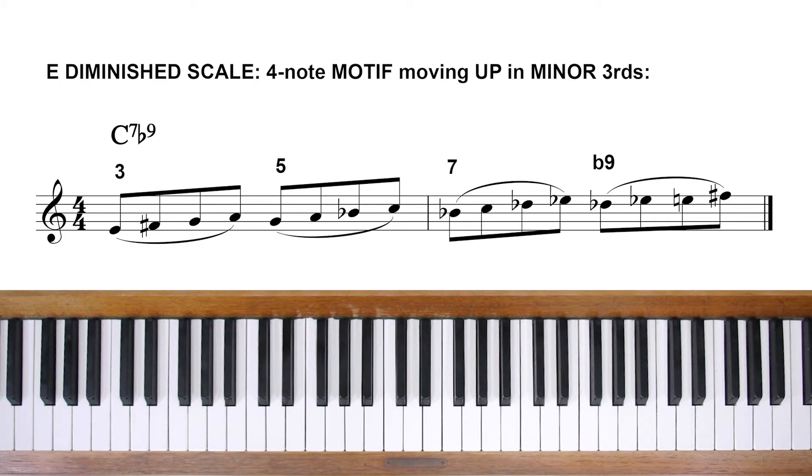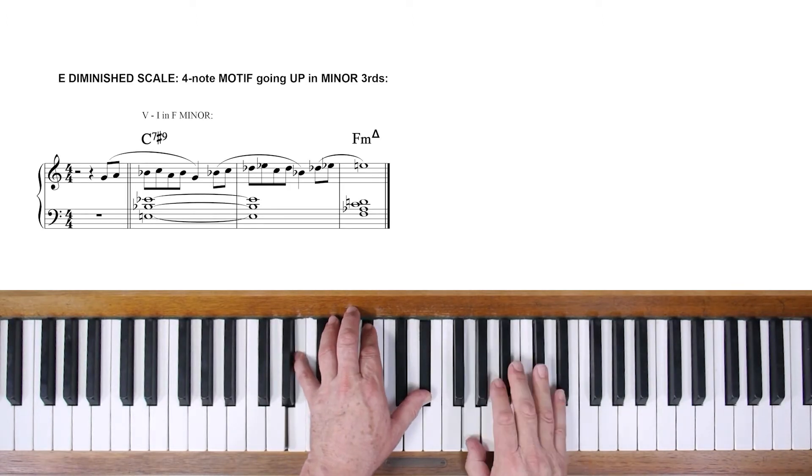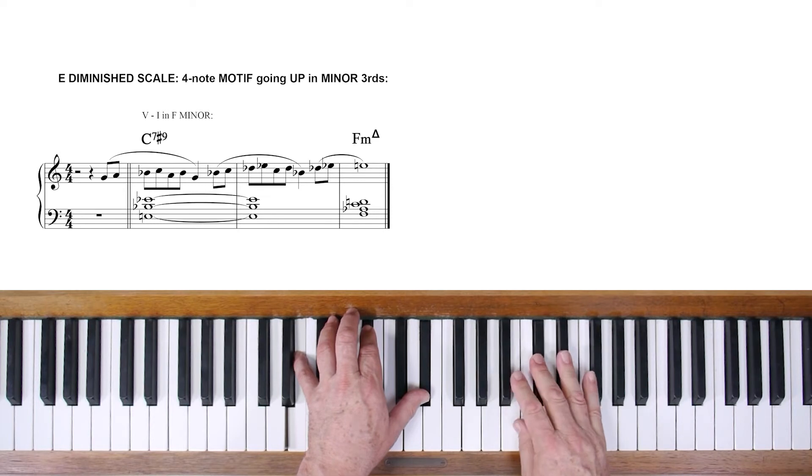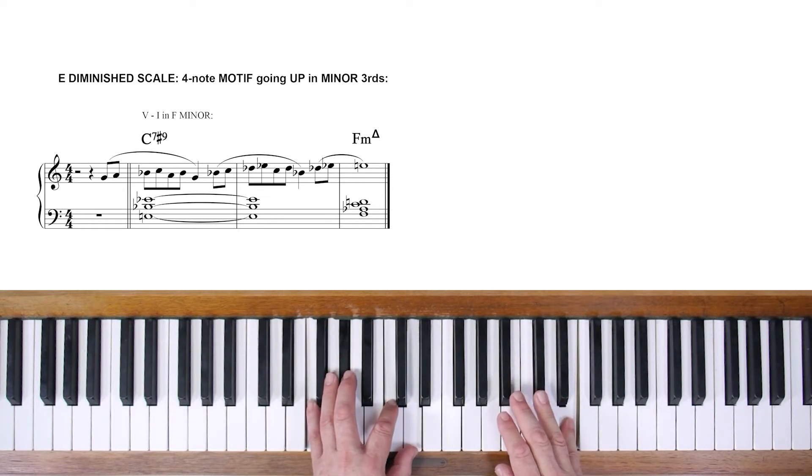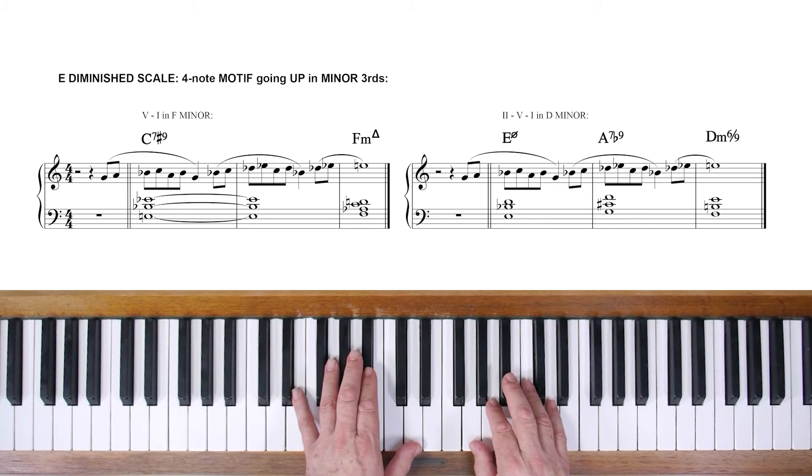Here's another motif made from four consecutive notes. This time I'm going to start the phrase as a pickup, so the pattern goes across the bar line and sounds less square. I'm also repeating some of the notes in each group to vary the contour.